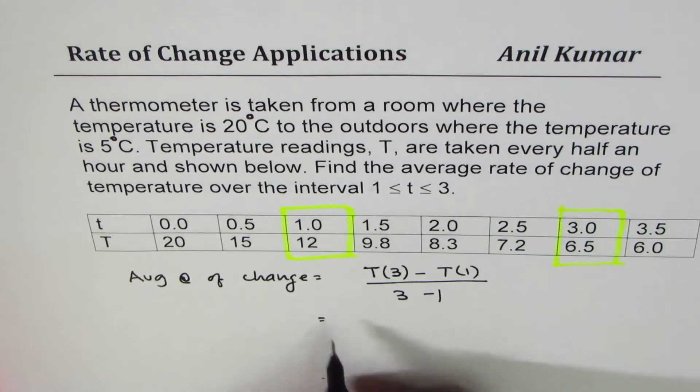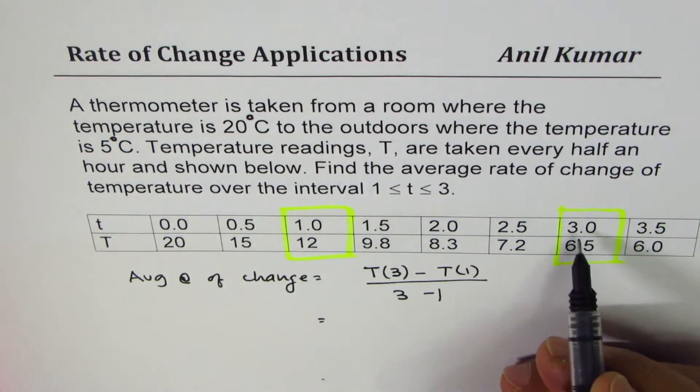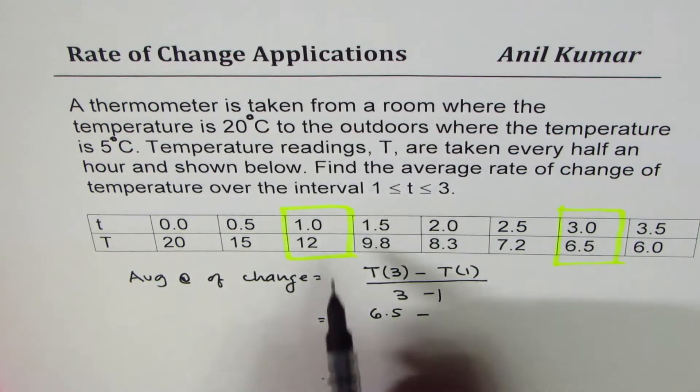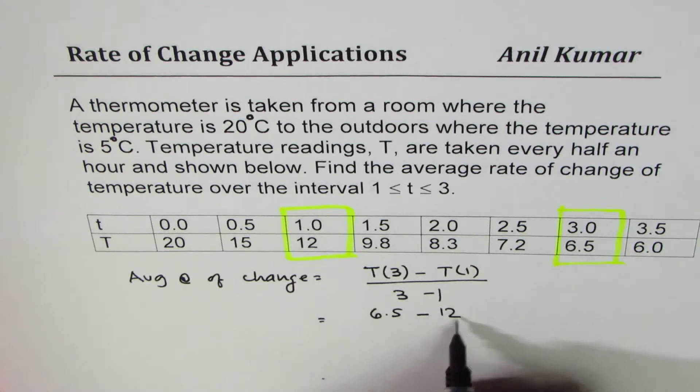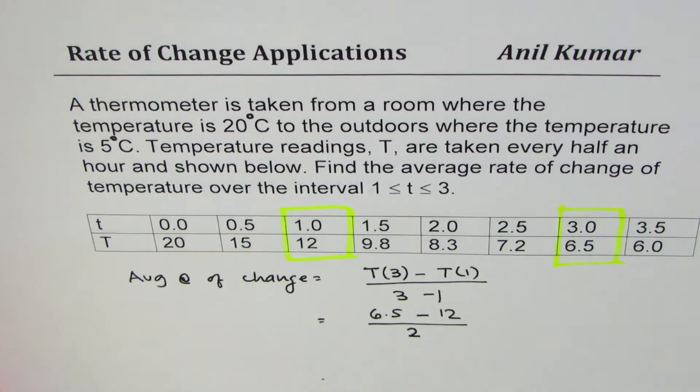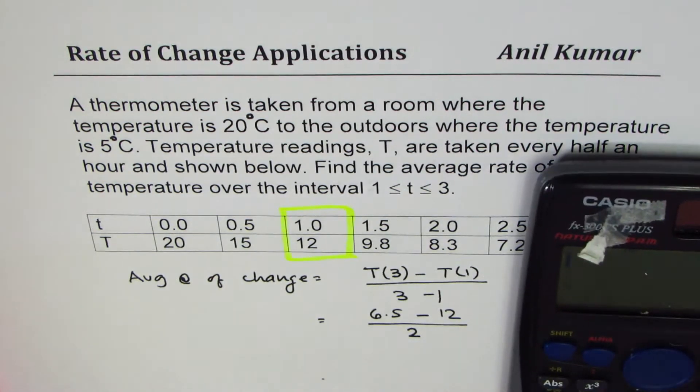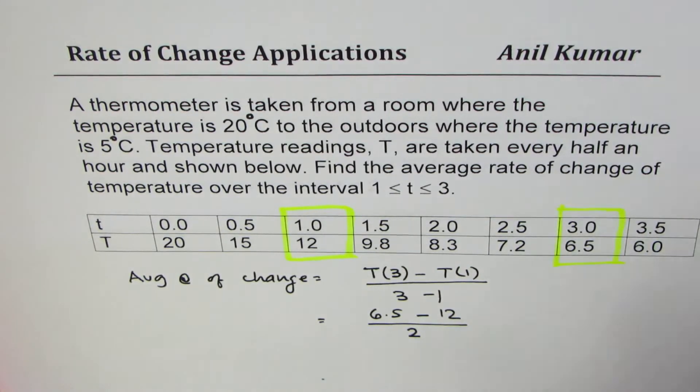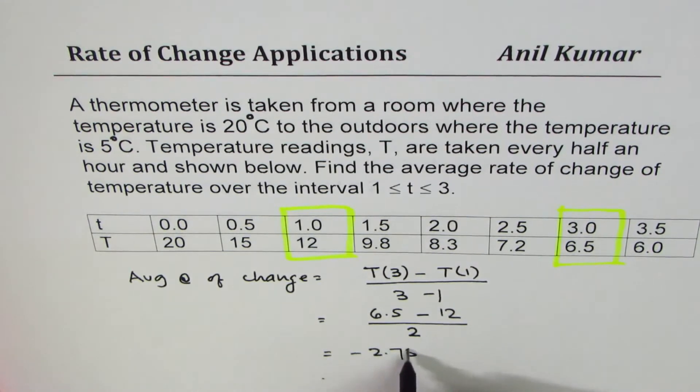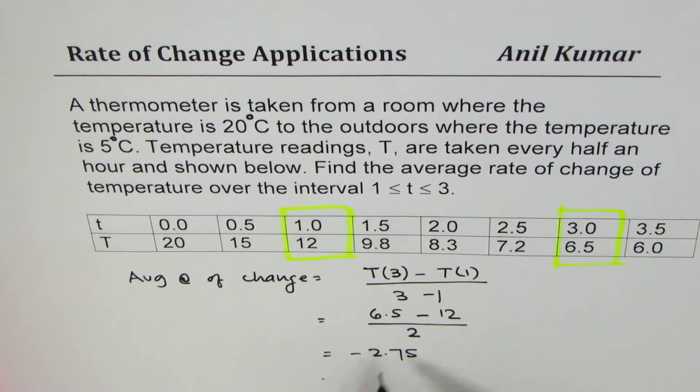In this particular case, when t is 3, the temperature is 6.5, so we'll write 6.5 minus when t is 1 it is 12, divided by 3 minus 1 which is 2. You can use the calculator now - we've got 6.5 minus 12 divided by 2, which is minus 2.75.